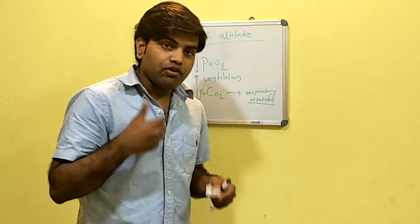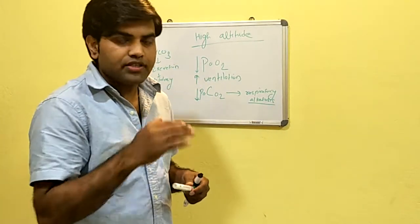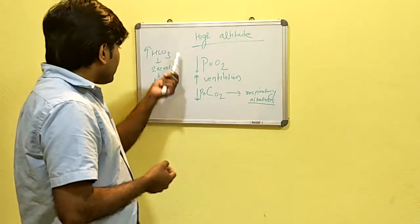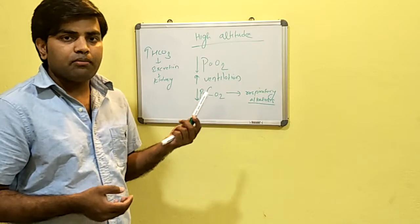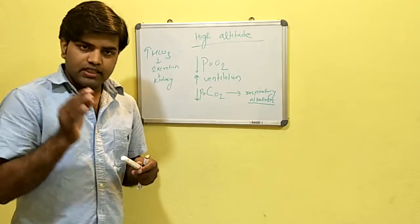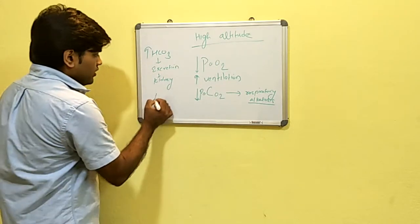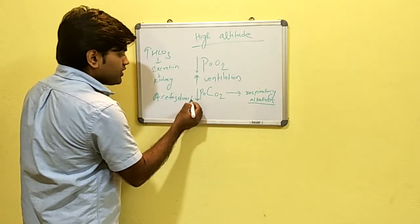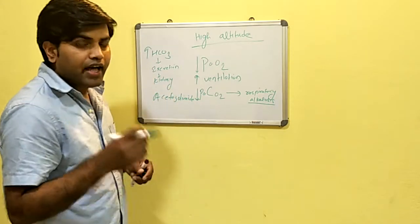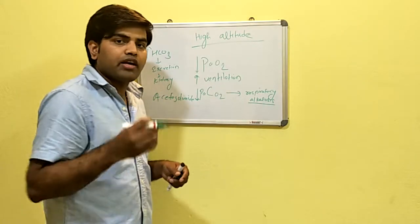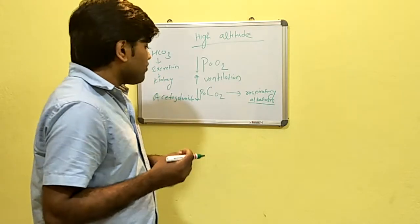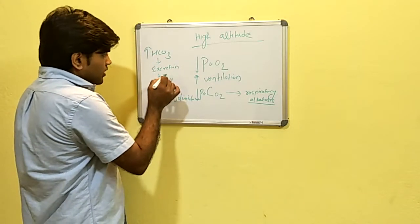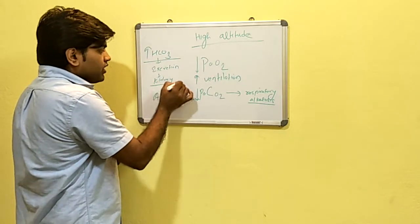If the body is unable to maintain the pH in the body, then additionally from outside, we will augment this process by giving a drug known as acetazolamide. Acetazolamide is a diuretic that helps excretion of the bicarbonate ion from our body, promoting bicarbonate excretion from the kidney.